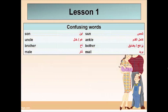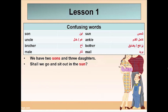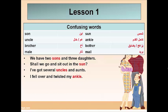We have some confusing words. Son and sun: 'We have two sons and three daughters.' 'Shall we go and sit out in the sun?' Uncle and ankle: 'I've got several uncles and aunts.' 'I fell over and twisted my ankle.'